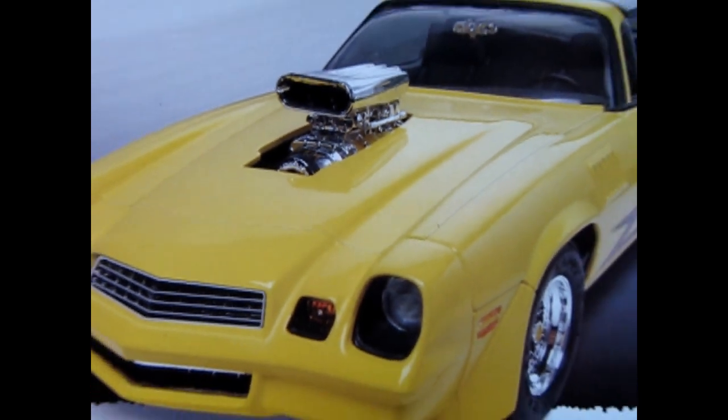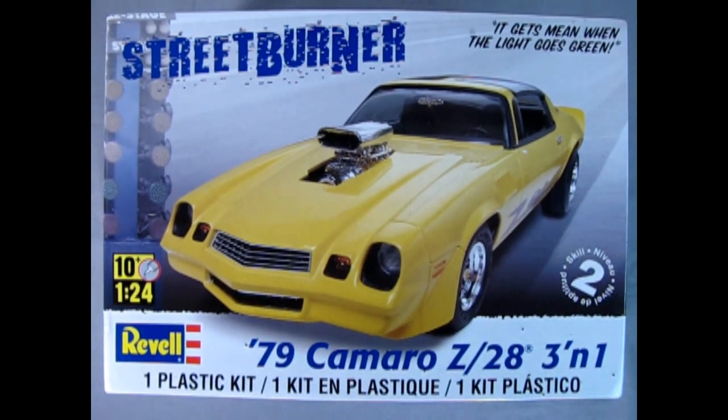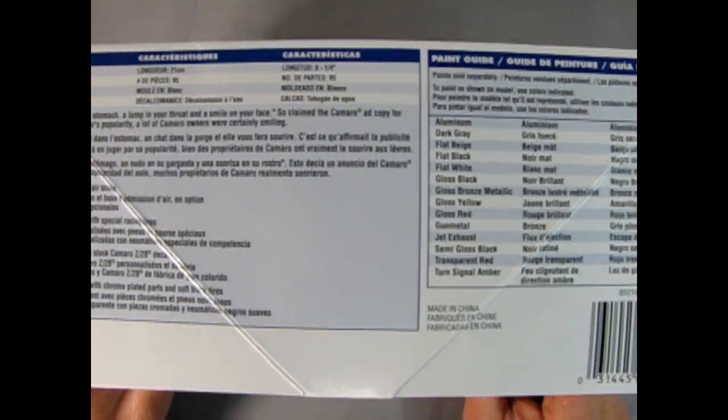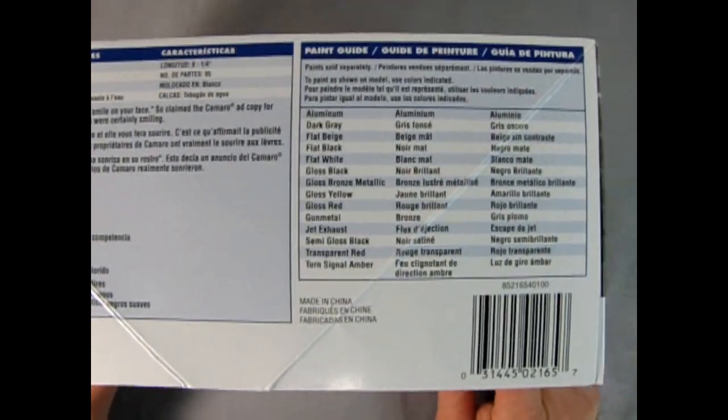Now we roll the clock all the way back to 1979 as we check out this great Camaro Z28 3-in-1 kit from Revell. This is a skill level 2 kit in 1:24 scale for ages 10 and up. On this side of the box we get some great details in history as well as the paint color chart.